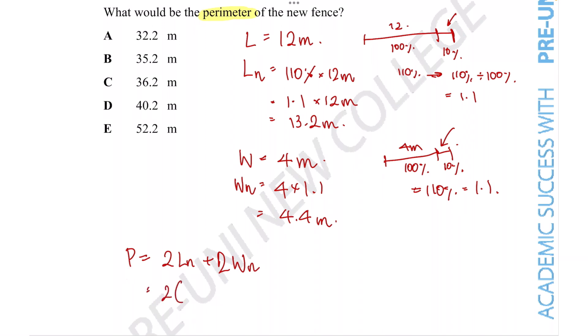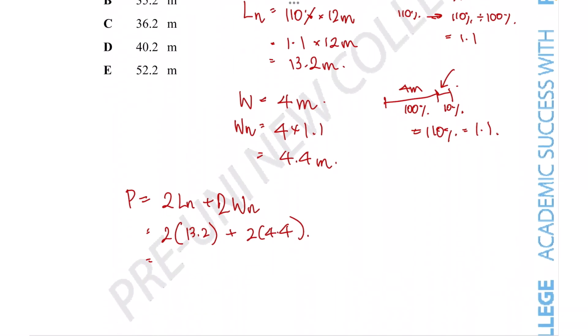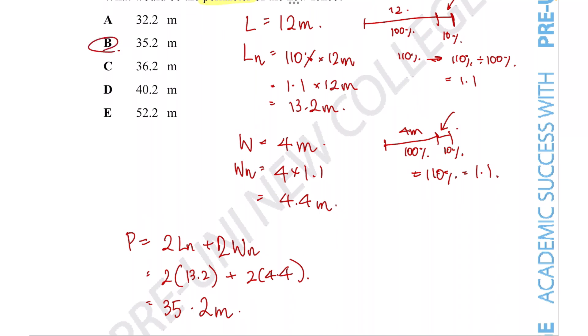We thankfully know all these values. The new length is 13.2 and the new width is 4.4. Adding all those calculations together gives us the grand total of the perimeter as 35.2 meters. So the correct response is option B.